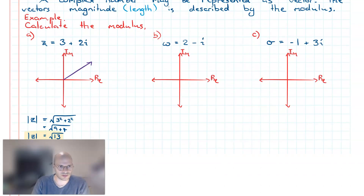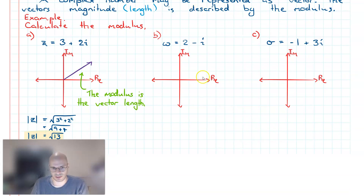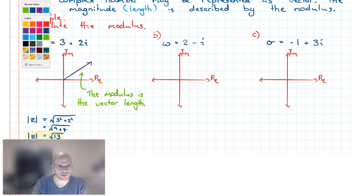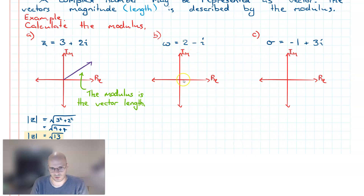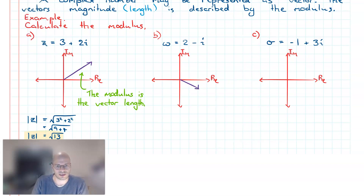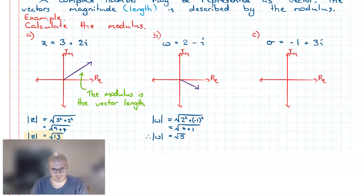What we notice from this example is that the modulus is the length of the vector. Let's look at two more examples. We have Omega equal to 2 minus 2i. Representing this on the Argand diagram, I go two units on the real axis and then minus one unit on the imaginary axis. Calculating the modulus, I take the absolute value of Omega as the square root of the real and imaginary components squared, giving us the modulus equal to root 5.